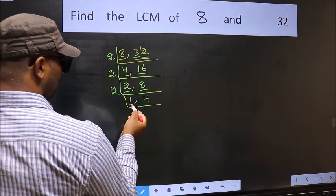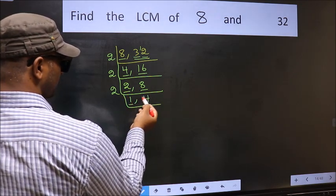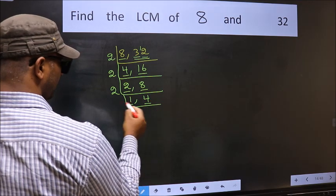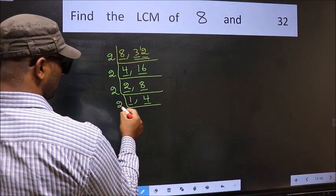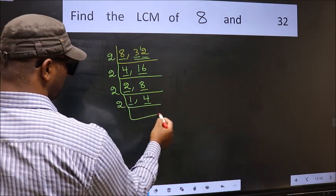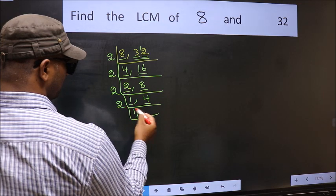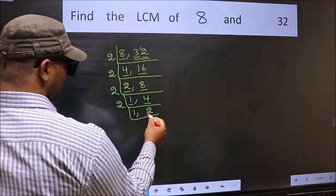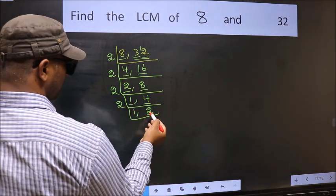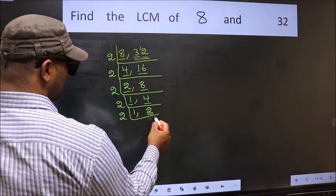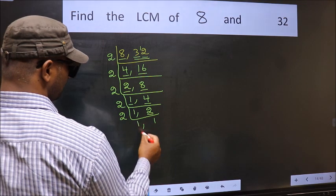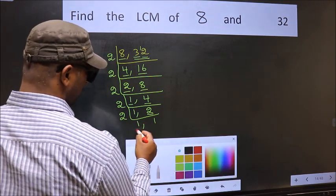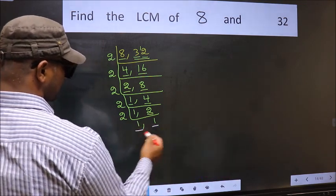Now we got 1 here, so focus on the other number 4. 4 is even so take 2. When do we get 4 in the 2 table? 2 twos are 4. Now we have 2 here; 2 is a prime number, so 2 ones are 2. So we got 1 in both places.